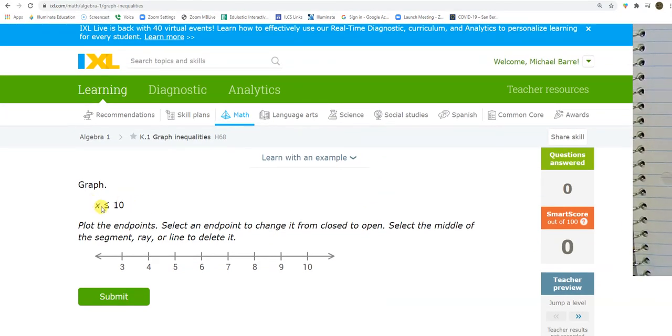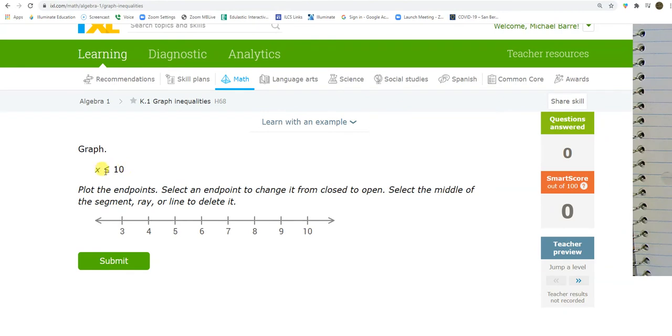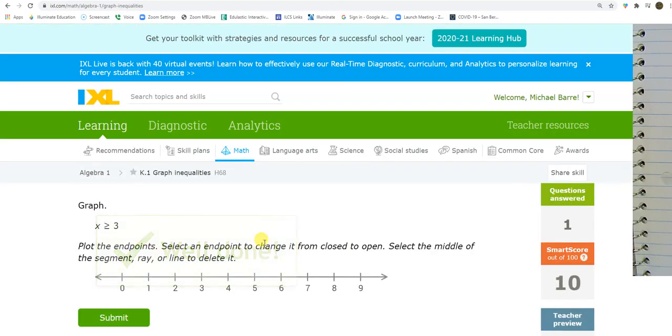Okay. So, I know right away this is going to be a closed circle. I want a closed circle right here. There's closed. And I want all the numbers. So, closed circle all the way to the end. There we go. Everything less than 10. Closed circle. Submitting it. Got it.